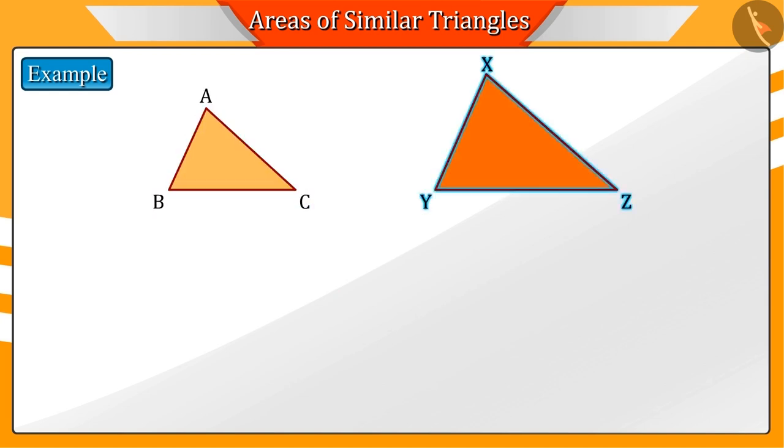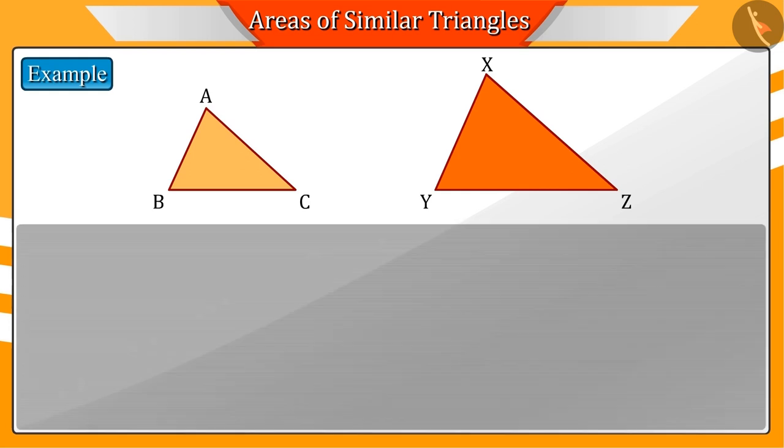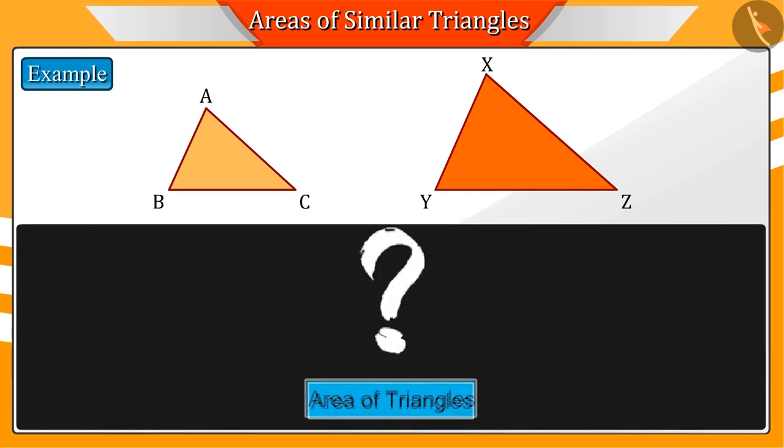Triangle ABC and triangle XYZ are two similar triangles. We have to find the relation between the ratio of the sides and the area. Hence, first of all, we will find the area of the triangles.